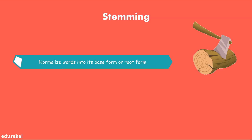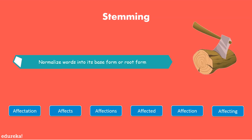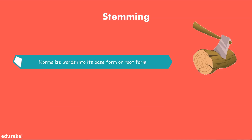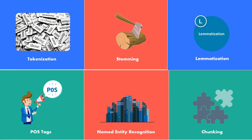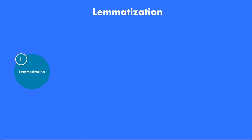The second process is stemming. Stemming refers to normalizing words into their base or root form. For example, the words 'affectation,' 'affects,' 'affections,' 'affected,' 'affection,' and 'affecting' all originate from the single root word 'affect.' The stemming algorithm works by cutting off the end or beginning of the word, taking into account a list of common prefixes and suffixes. This indiscriminate cutting can be successful in some occasions but not always.